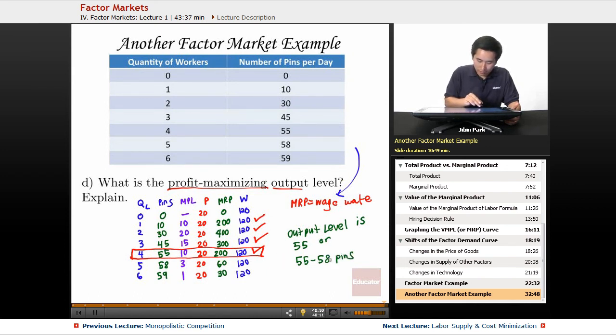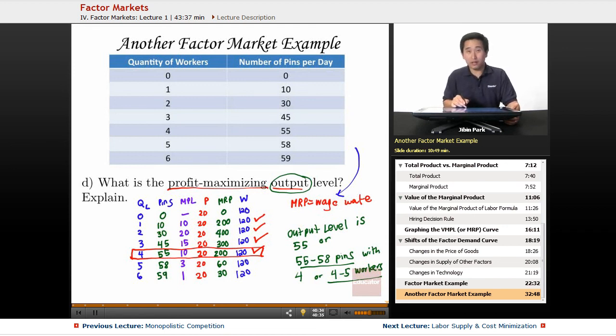If you were to say 4 workers, it wouldn't hurt. Output level is 55 or 55 to 58 pins with 4 or 4 to 5 workers. The thing is, if you only say 4 to 5 workers, then you're not answering what the output level is—that's the number of pins. But if you did box this area, chances are you will get credit on the AP exam because you had that as a double safeguard. Thank you for watching.